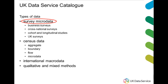You can access data collections, variables, case studies, ESRC outputs and support or how-to guides. Here's the range of types of data that are available from our catalogue. They include survey microdata, census data, international macro data, and qualitative and mixed methods data.